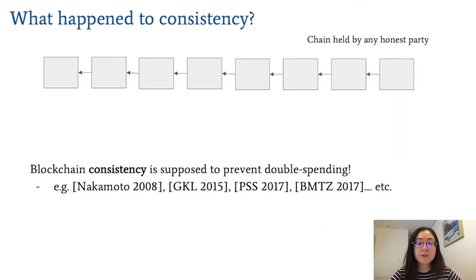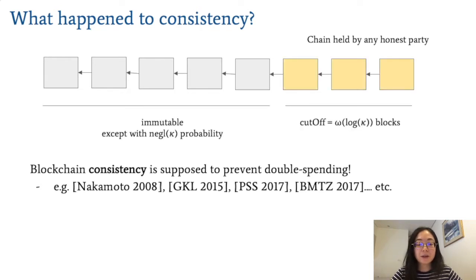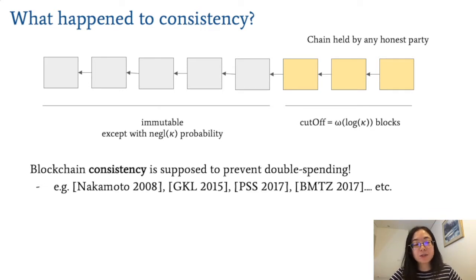But this kind of attack is really not supposed to happen because of a very common property of blockchain called consistency. Informally, consistency says that if an honest party removes the most recent blocks in his chain — given by the cutoff parameter — then the rest of the blocks, the ones in gray here, are supposed to be immutable, meaning they can't be reverted or changed in any way.